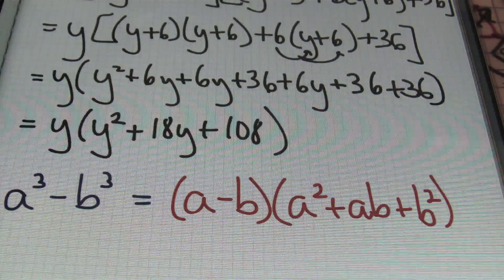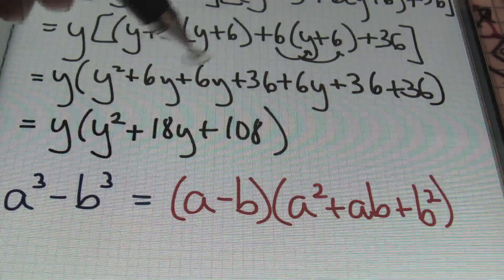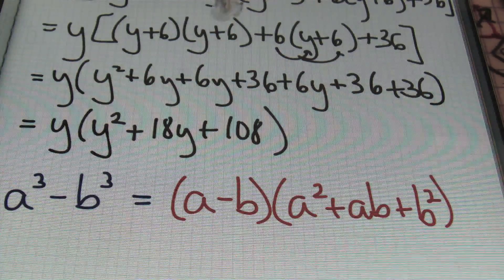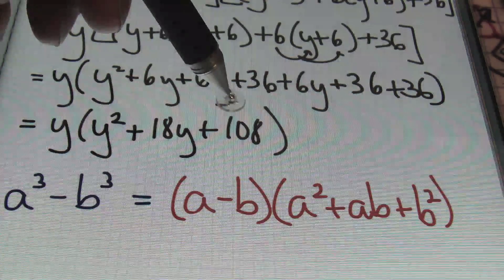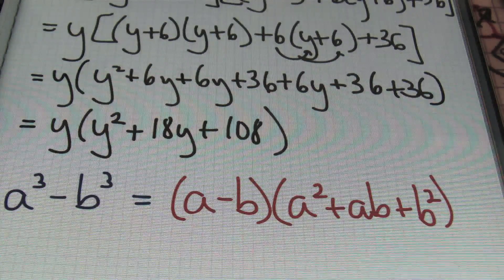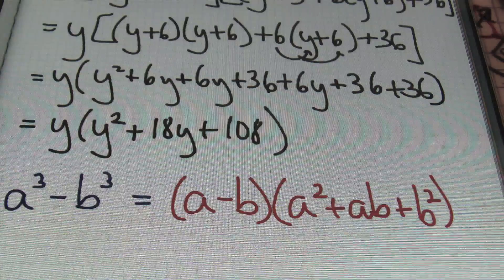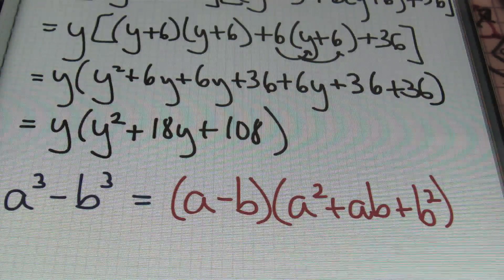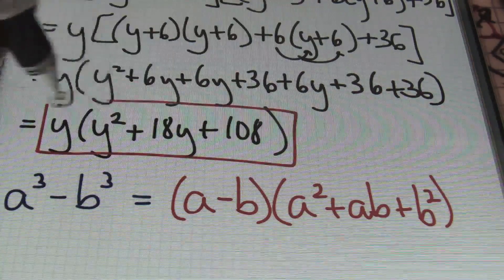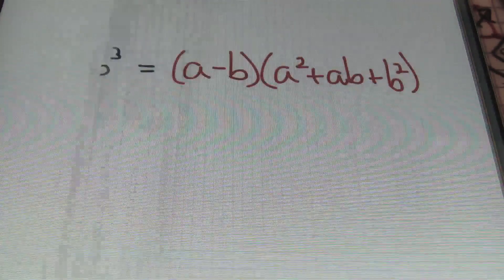In most cases, your trinomial here will not be factorable, and this is an exact situation like that. There aren't two factors of 108 that will add to give me 18. And that's the answer, ladies and gentlemen — done and done. I'm going to put a red box around this and move on to problem number 4.